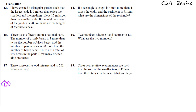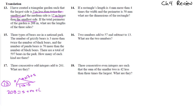Number 13 says: I've created a triangular garden, so we should draw the shape. The largest side L is five meters less than twice the smallest side. The medium side is 17 larger than the smallest side. If the total perimeter of the garden is 208, then 208 equals the small plus the medium plus the large side. We substitute the expressions in — this is substitution with three equations.